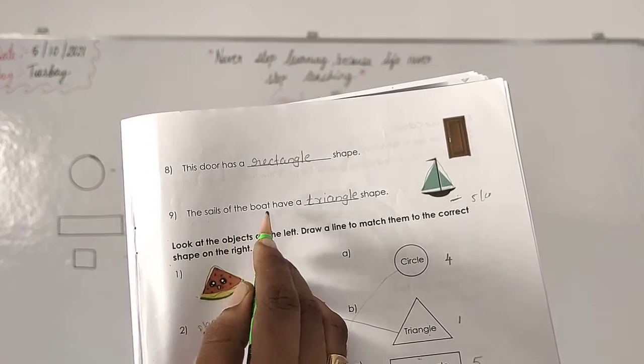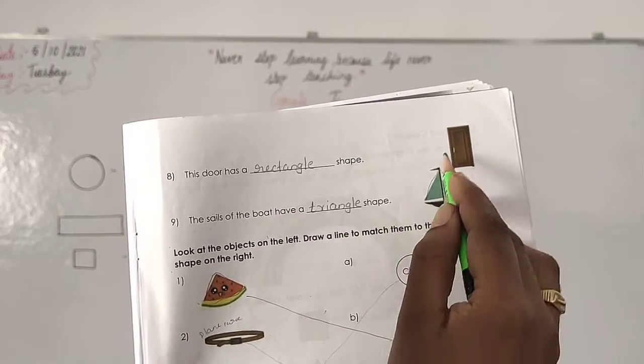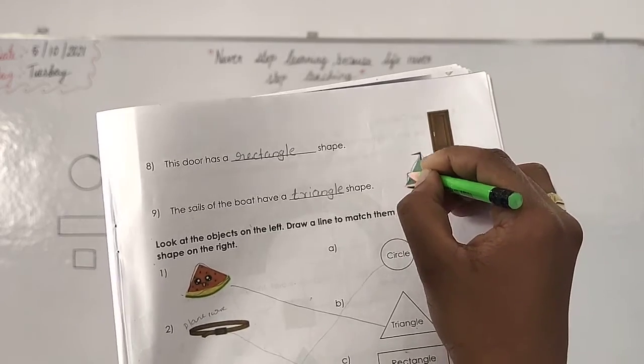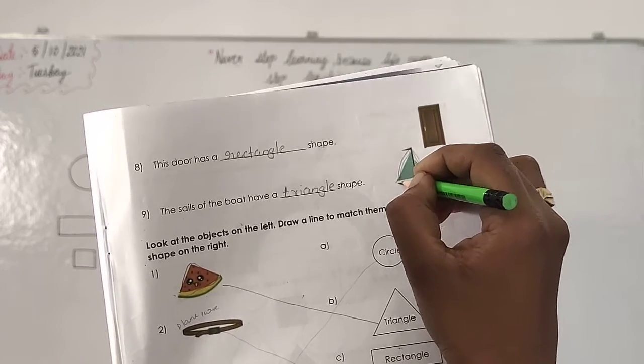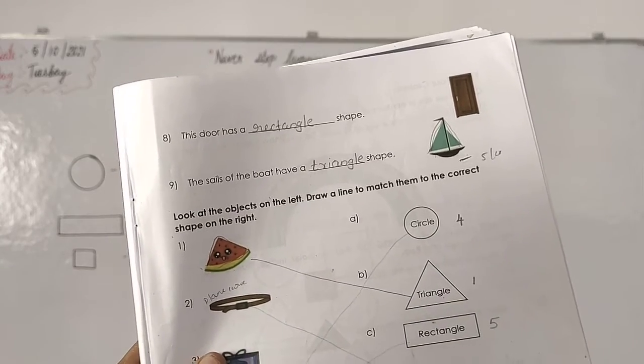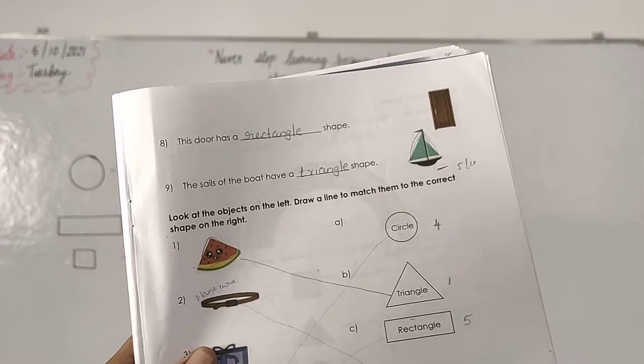Then next page. The sails of the board have a dash shape. Which shape this one? Tell me. Triangle. Yes. Triangle no? Yes. Triangle shape. Write down triangle. T-R-I-A-N-G-L-E. Complete it.